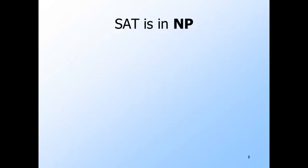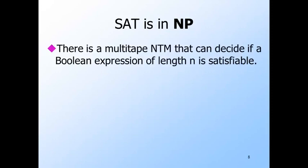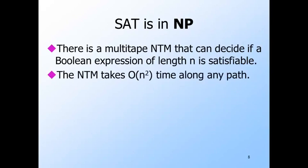Generally, the easier part of proving a problem NP-complete is proving it is in NP. You just guess a solution and then in polynomial time you check it. And the SAT problem is no exception. We need to describe a non-deterministic Turing machine that can take a coded Boolean expression as input and tell if it is satisfiable. The non-deterministic machine must be polynomial time bounded. In this case, order n-squared time suffices.